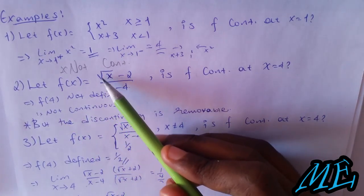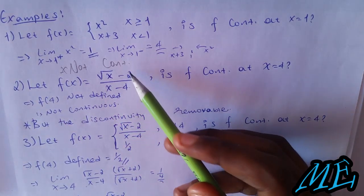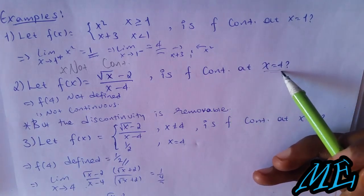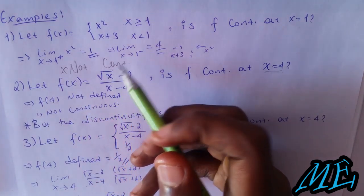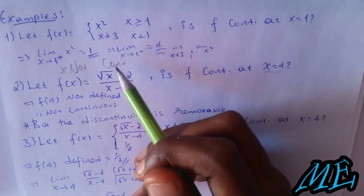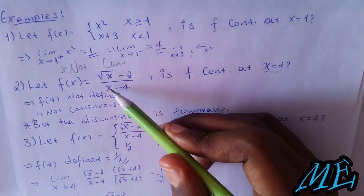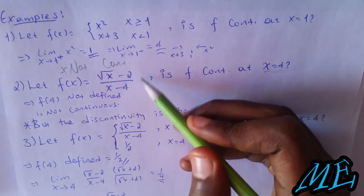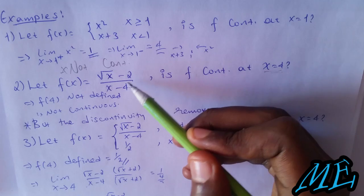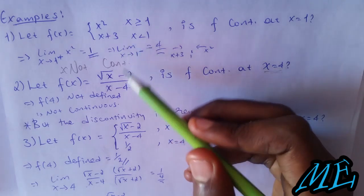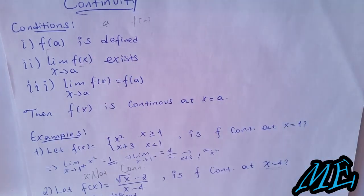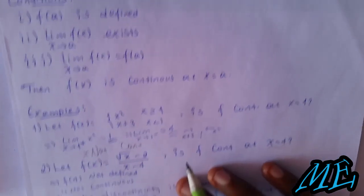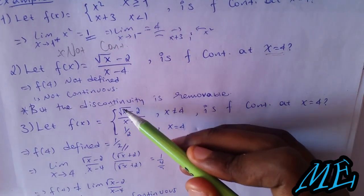Example 2: Let f(x) = (√x - 2)/(x - 4). Is f continuous at x = 4? f(4) is not defined because 4 - 4 is zero in the denominator. The limit as x approaches 4 exists. However, f(4) is not defined, so there's discontinuity, but it's removable.